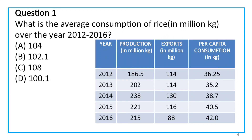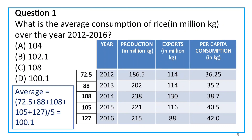Consumption equals production minus exports. That is the formula. In this year, consumption is the average value. We have to add the consumption values — add 84.5 to 114.5 — to find the total.